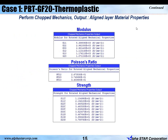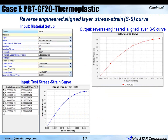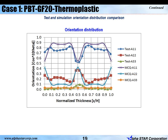The typical output is the aligned layer material properties: modulus, Poisson's ratio, and strength. Given the aligned layer properties and modulus values E11-flow, E11-cross, and E22-cross-flow, one can generate a reverse-engineered layup that satisfies E11 and E22 within 5% of the aligned layer ply properties. We can also introduce non-linearity given a test stress-strain curve, and reverse-engineer the aligned layer stress-strain curve using MCQ Chopped software. This shows a validation of flow, cross-flow, and 45-degree results comparing test and MCQ Chopped generated stress-strain curves, as well as a validation of orientation distribution through thickness comparing test and MCQ-generated orientation tensors.